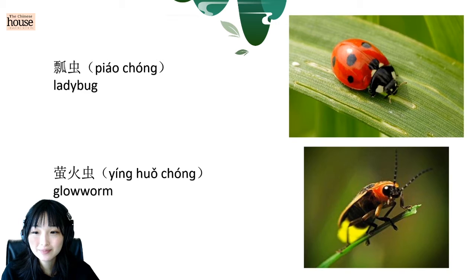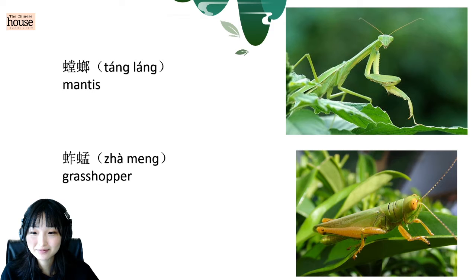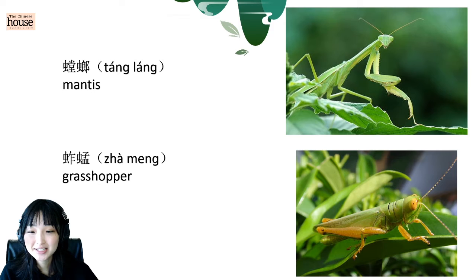And then, mantis. 堂蚁. Good. Second tone. 堂蚁. Nice. Grasshopper. 炸蚁. 炸蚁. The last character, 猛, light tone. 炸蚁. Good.